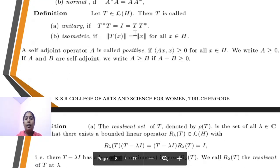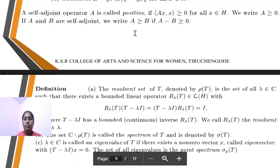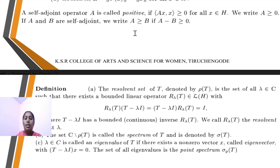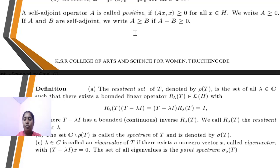Next definition: unitary and isometric. Unitary: T*T = I = TT*. If ‖T(h)‖ = ‖h‖, then it is said to be isometric. Next definition: self-adjoint operator A is positive. If the condition ⟨Ah, h⟩ ≥ 0 is satisfied, we say A ≥ 0. If A and B are self-adjoint, we write A ≥ B if A − B ≥ 0.